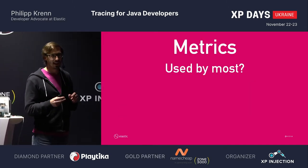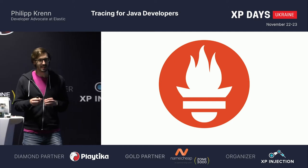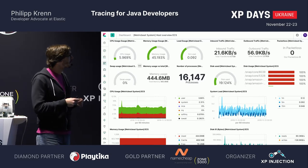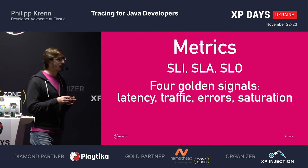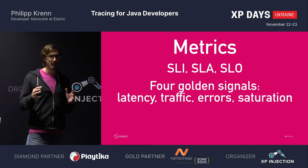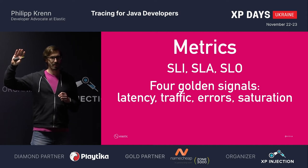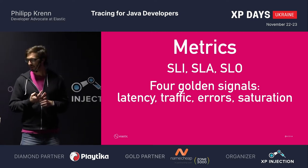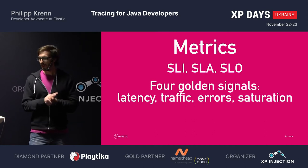Then you might have metrics, and I guess most of you are using metrics as well. Maybe something like Prometheus. The general idea is you have a lot of metrics where you aggregate stuff together. Then you want to think at a higher level about what your metrics are actually doing — so you don't just have random numbers. Is everybody familiar with SLI, SLA, and SLO? The service level indicator — where do you stand today?